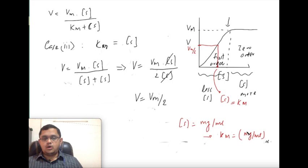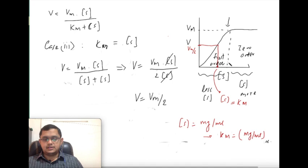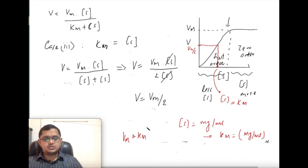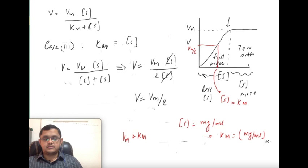This is all about the MM equation — how to develop it and the various cases. Both parts of the graph are explained with the MM equation, which is why it has a very significant role in enzyme kinetics. The MM constants Vm and Km are very important. Since this is a non-linear graph, how to calculate Vm and Km in a better way is what we will cover in the next lecture. Thank you.